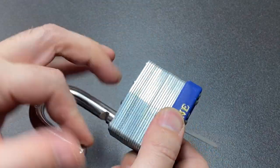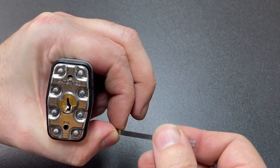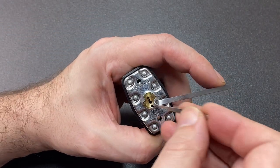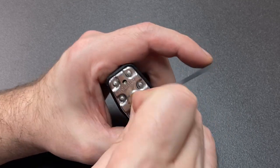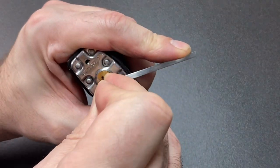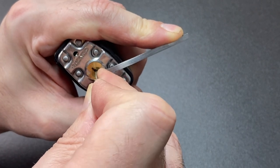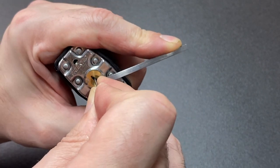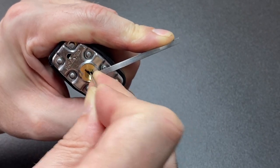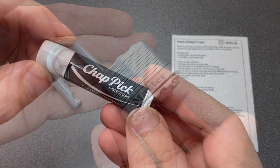Last but not least, the half diamond, which you can use to pick and scrub. I'll pop this in with some turning force, first try to rake some of the pins like this, then once I've done what I can, find any remaining binding pins and pick them manually with the tip of the diamond. Yep, we're open.